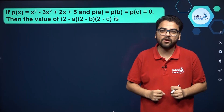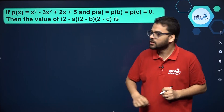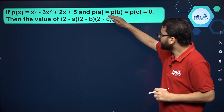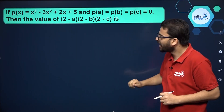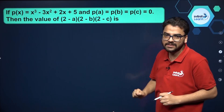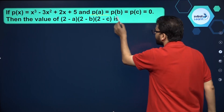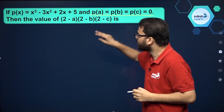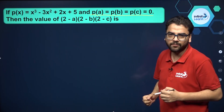You've got a question on the basis of the basic definition of zeros of a polynomial. Over here, you've been given this cubic polynomial, and P of A is equal to P of B is equal to P of C is equal to 0. You have to find the value of (2 minus A)(2 minus B)(2 minus C). If you try to use this given condition by putting A, then B, then C individually into the polynomial, it will waste your time.